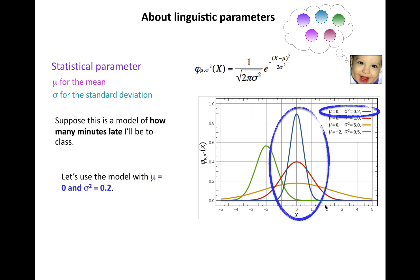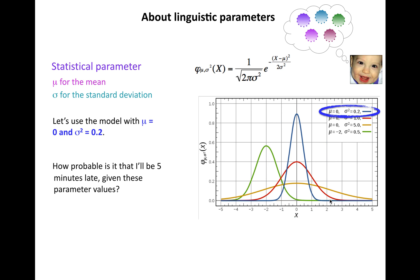We have this blue curve right here. You can see what's most likely is up here and least likely is out here. So how probable is it, given this model with these parameters, that I'll be five minutes late to class?